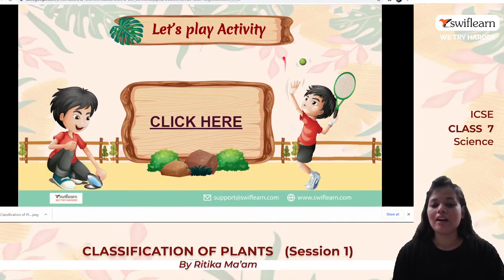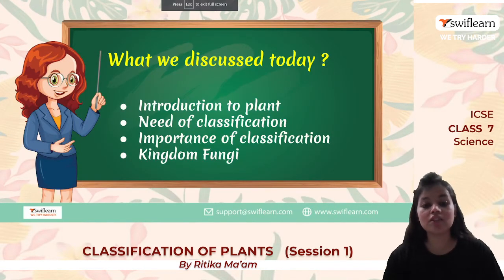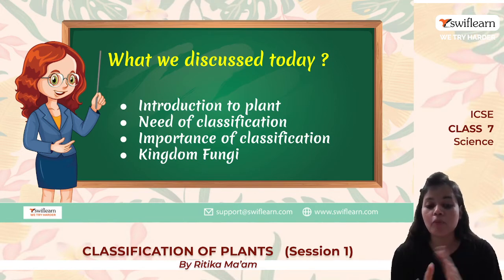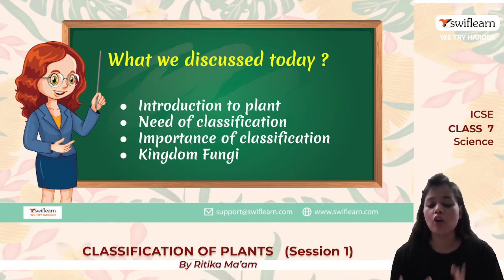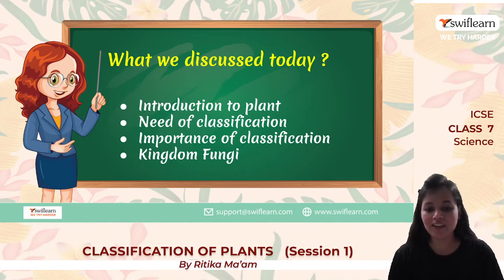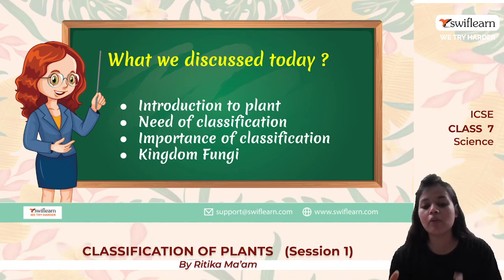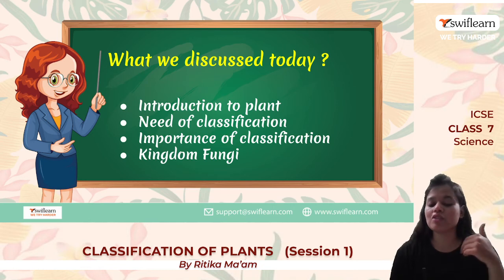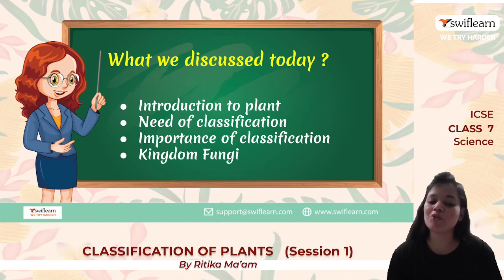To summarize what we learned today: we learned about plants, why we need classification, the importance of classification, and we focused on kingdom Fungi. I hope you understood everything — it was a very small, easy chapter. We will be studying every kingdom one by one in subsequent lessons. Keep revising, keep learning, and you can book your free trial class on Swift Learn as there are very few slots left. Thank you, see you in the next class!